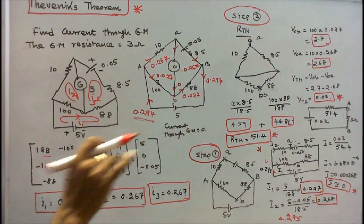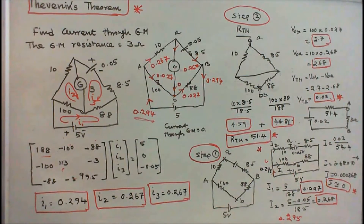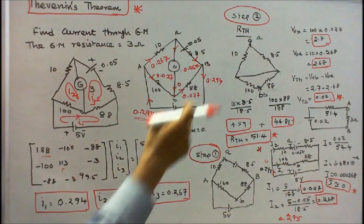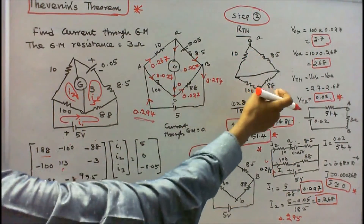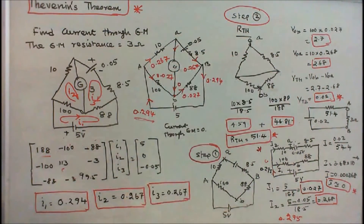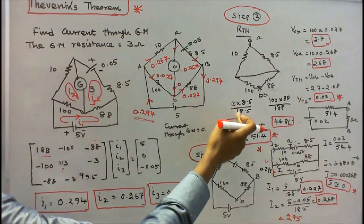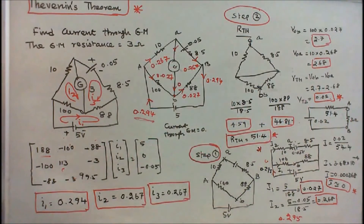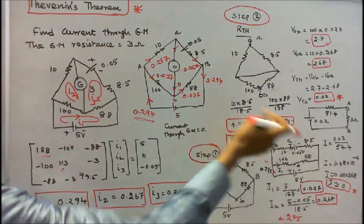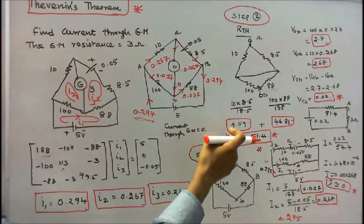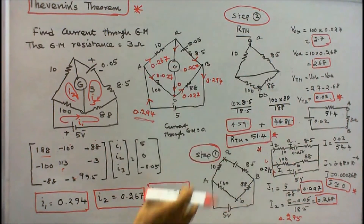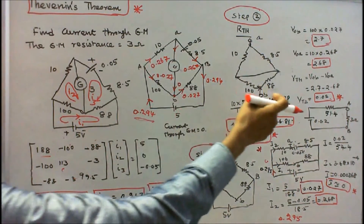Next, I find Thevenin's resistance by shorting both batteries. With the batteries shorted, the 10 ohm and 8.5 ohm are in parallel: 10 times 8.5 divided by 18.5 equals 4.59 ohms. The 100 ohm and 88 ohm are also in parallel: 100 times 88 divided by 188 equals 46.81 ohms. Therefore, Thevenin's resistance is 4.59 plus 46.81, equal to 51.4 ohms.